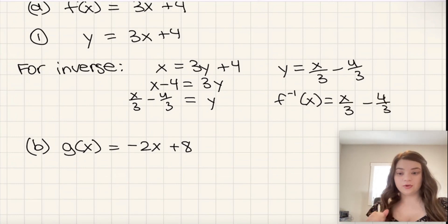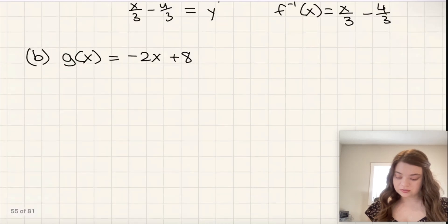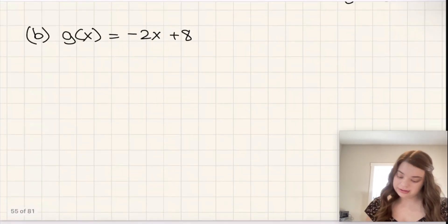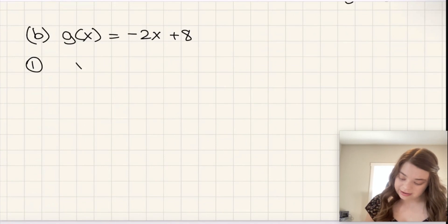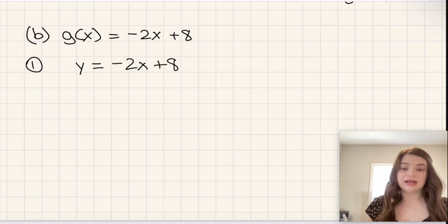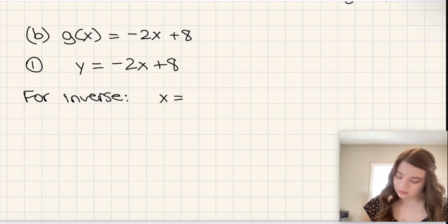Okay, let's try one more example. So, for this one, first thing we're going to do, step one, is to sub y for g of x. So, we now have y equals negative 2x plus 8. Now, for the inverse, I'm going to swap x and y. So, we now have x is equal to negative 2y plus 8.